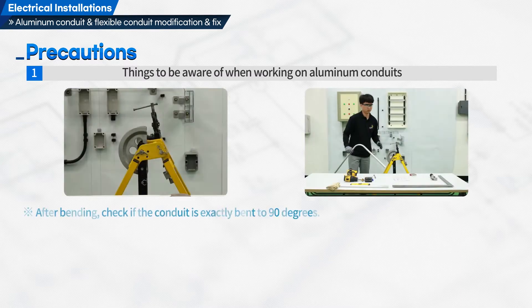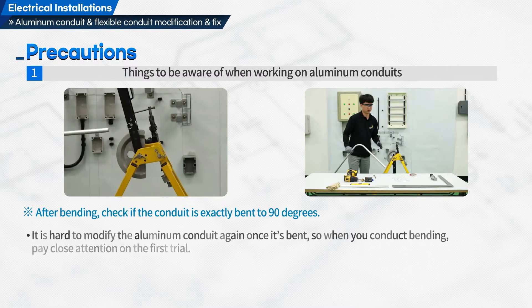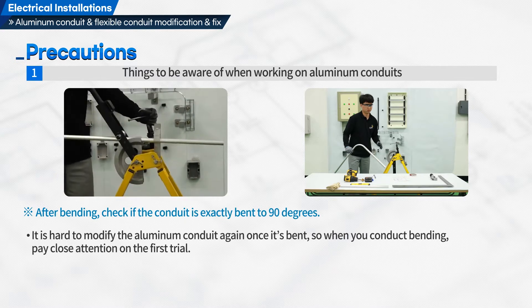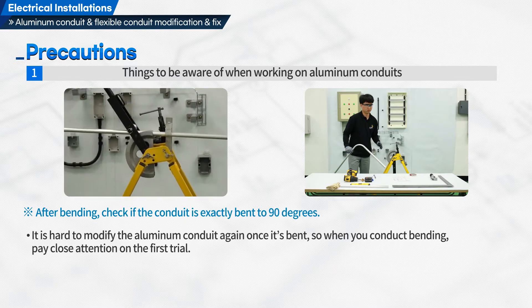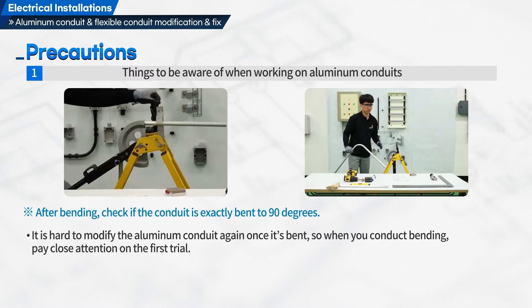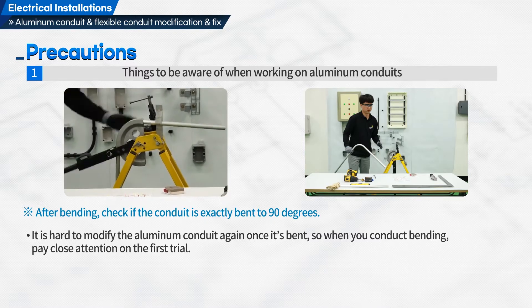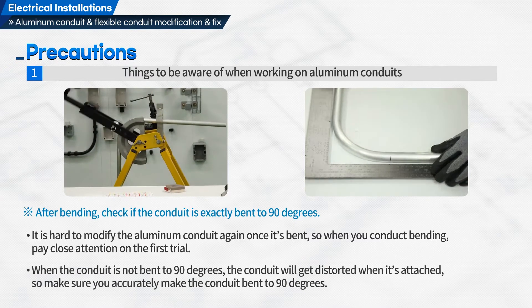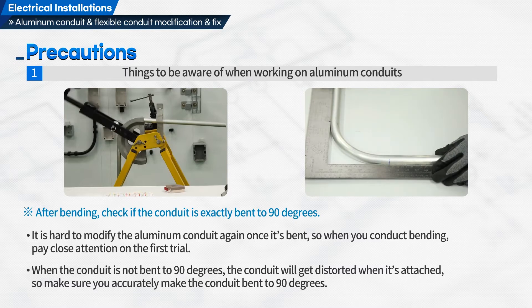Second, after bending, check if the conduit is exactly bent to 90 degrees. It is hard to modify the aluminum conduit again once it is bent, so pay close attention on the first trial. When the conduit is not bent to 90 degrees, it will get distorted when attached, so make sure you accurately bend the conduit to 90 degrees.